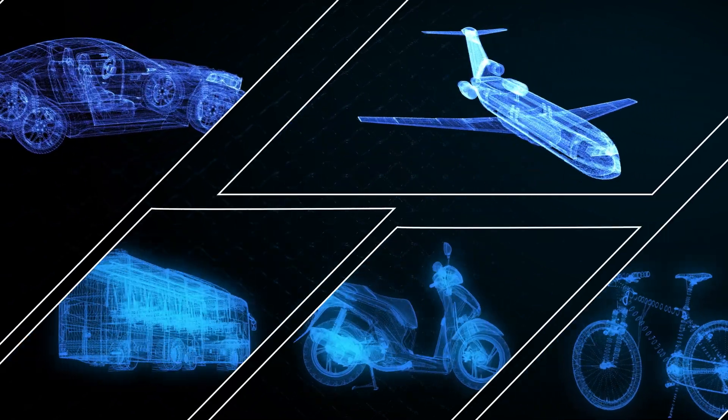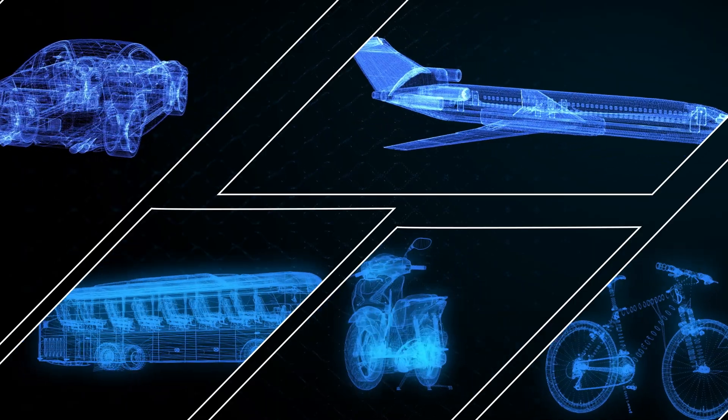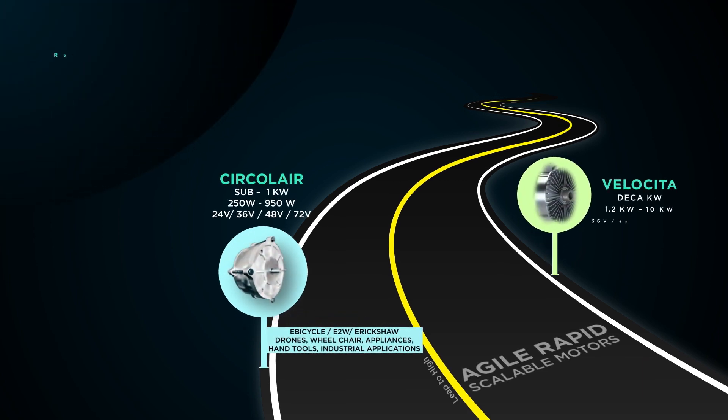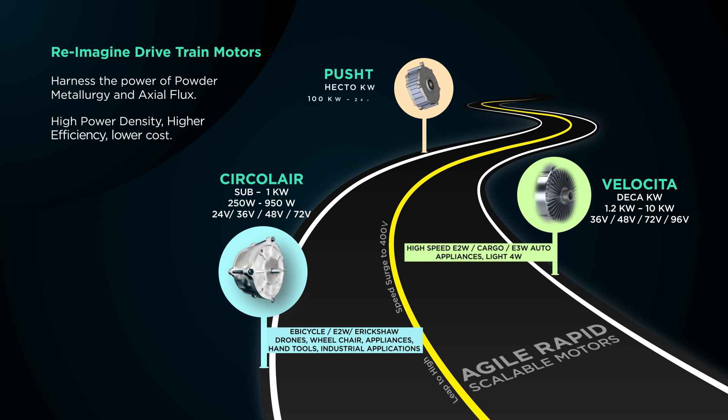From bicycle to rickshaw, scooters, cars, buses and roads. Circular, Velocita and Puster range for two-wheeler, three-wheeler, four-wheeler and commercial electric vehicles.